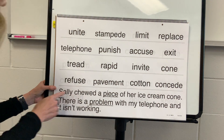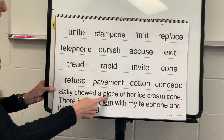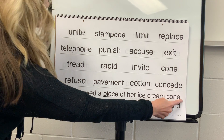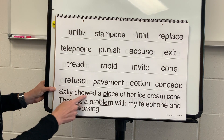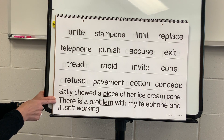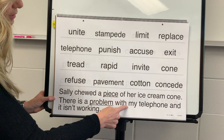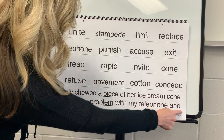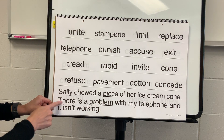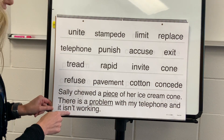Now we will read some sentences. Get ready. Read: Sally chewed a piece of her ice cream cone. Yes, I'll read it in two parts: Sally chewed a piece of her ice cream cone. Your turn. Get ready. Read: There is a problem with my telephone and it isn't working. My turn: There is a problem with my telephone and it isn't working.